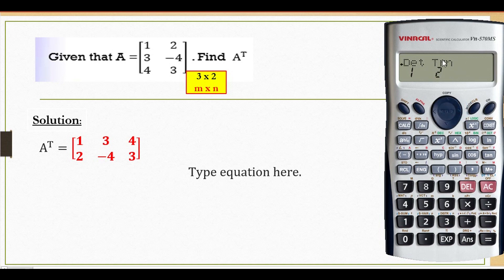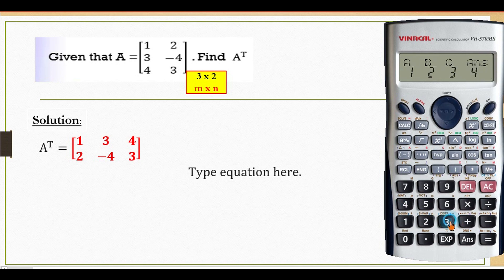Press 4. TRN stands for transposition, so press number 2. Then shift 4, and press number 3 to call out the matrix that we inserted just now — so matrix A. Then you will get the transposition of matrix A. Press equal to.